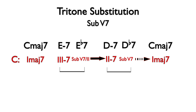We can do the same for the sub-5 7 of 2. Since the related two chords are moving down by half-steps to the tritone substitution chords, we will use a broken line for the brackets as well.